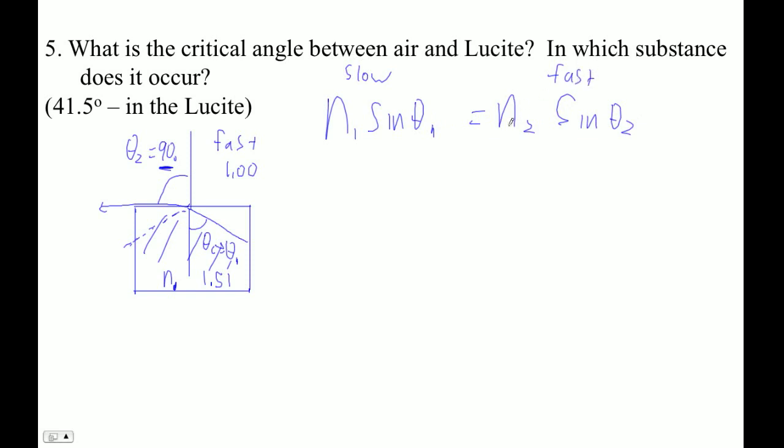which makes this n smaller than this one. So I go 1.51 times the sine of the critical angle, I'll call it theta_c, equals n2. In this case, it's 1.00, that's our fast medium, sine of 90 degrees.